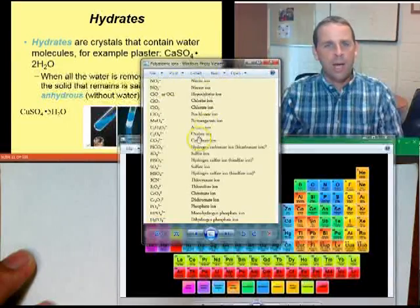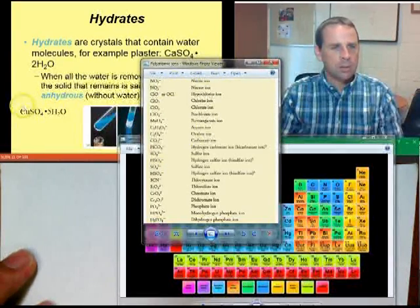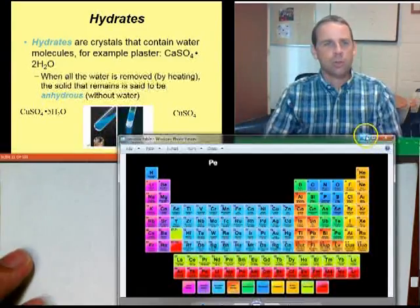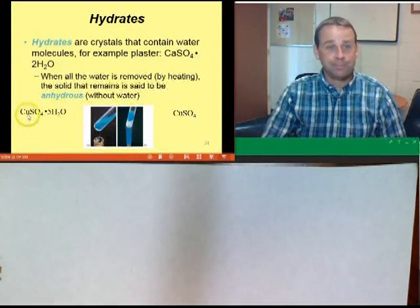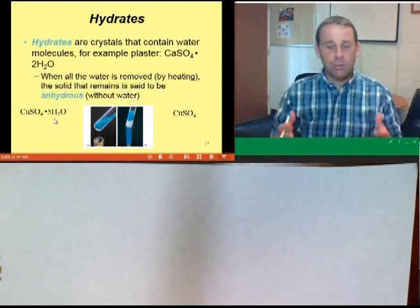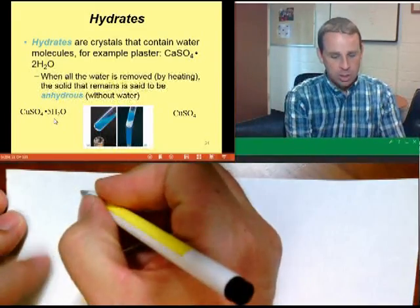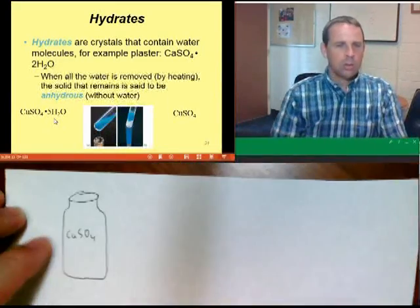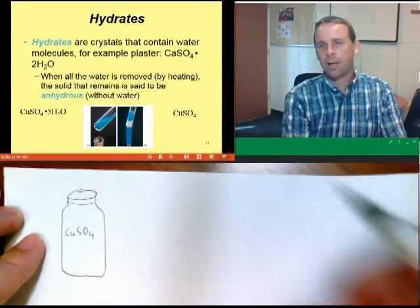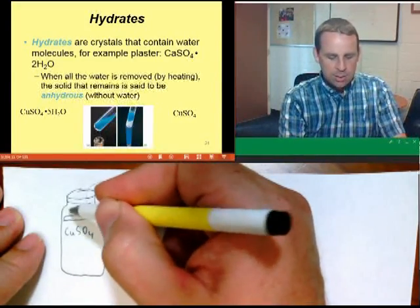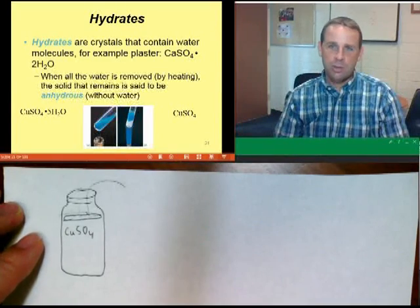Looking at the charge on the ion: if we have one sulfate ion at 2−, the copper must have a 2+ charge. So this is copper(II) sulfate. For every unit of copper sulfate, we have a dot showing five water molecules. Here's my bottle of copper sulfate — the problem is it's hygroscopic, so every time I open the lid, water comes in and sticks to the copper sulfate crystals on the surface.